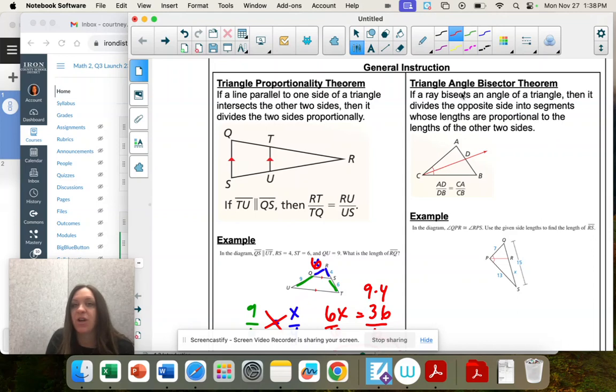Our last one is triangle angle bisector theorem. If a ray, a ray is just a line coming out of an angle, bisects, that means cuts in half the angle of a triangle, we have two congruent angles, it's cut it in half.